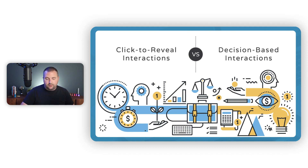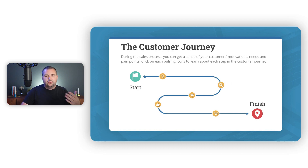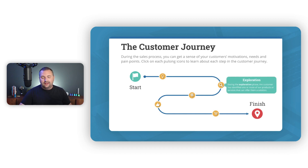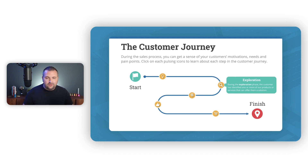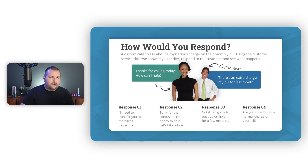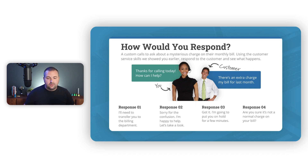To illustrate the contrast: a click-to-reveal interaction might have buttons the learner clicks to reveal some content. There's a time and place for these, but no critical thinking skills are really applied — the only thing the learner has to know is how to use their mouse. What we should be moving towards are interactions where the learner has to make a decision and potentially see the outcomes or consequences of those decisions.